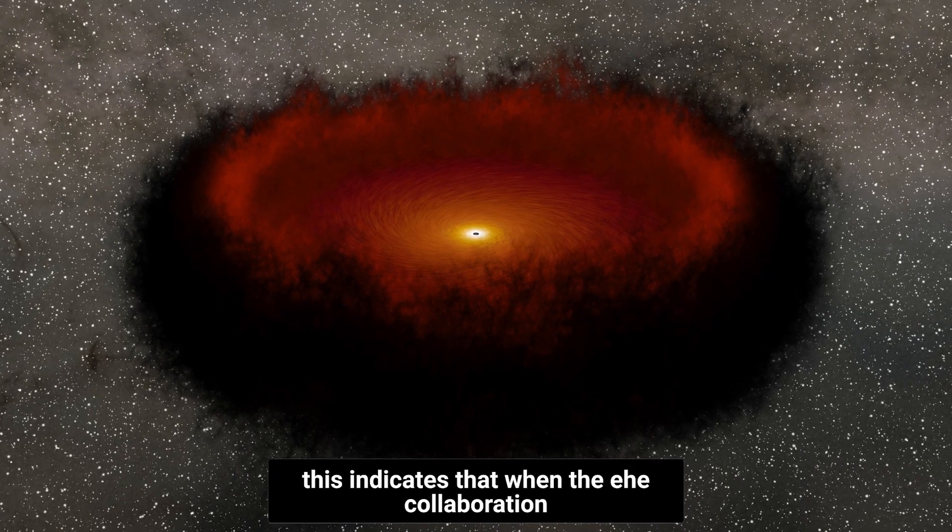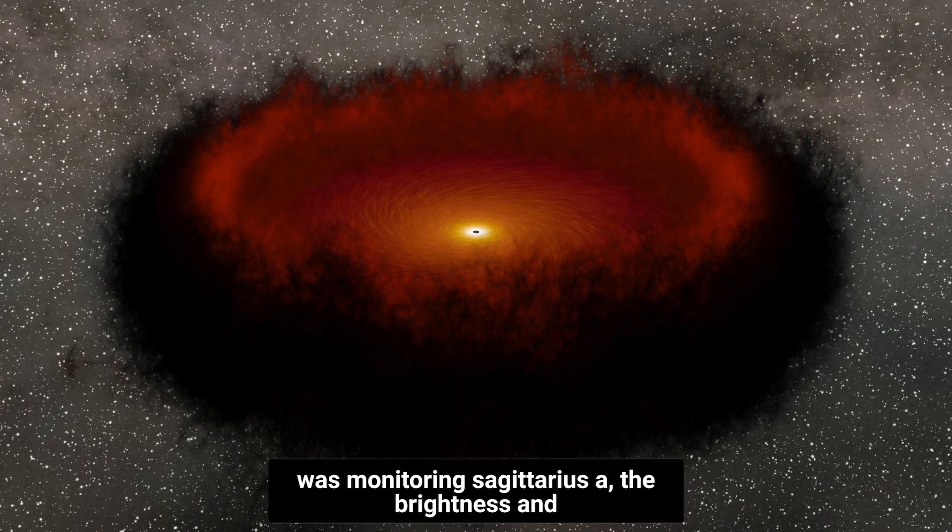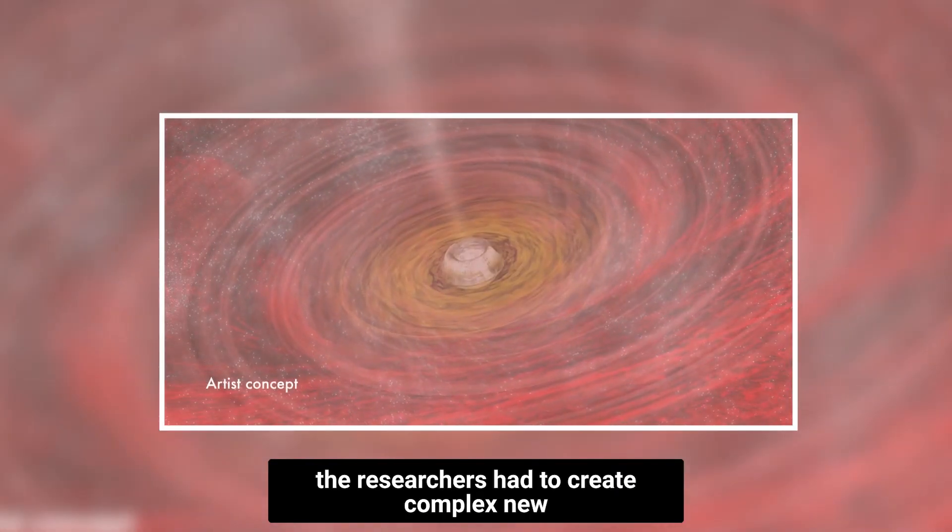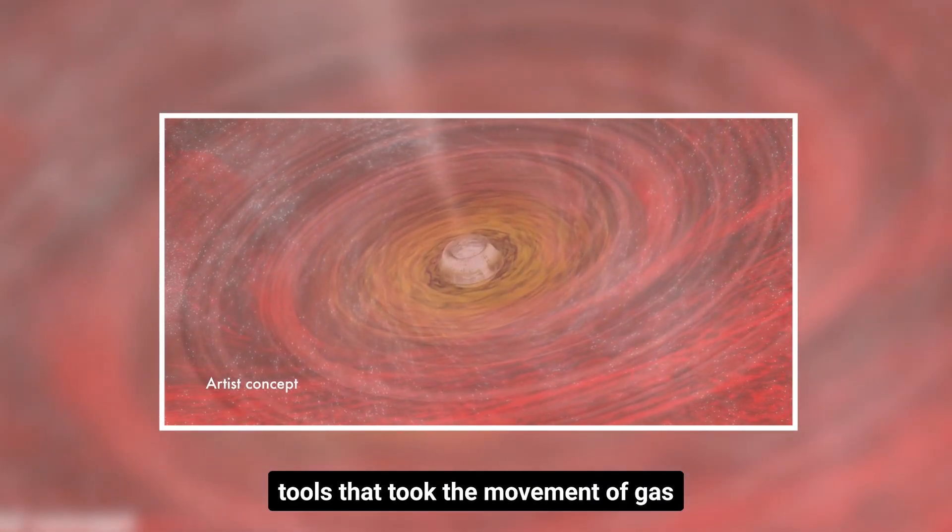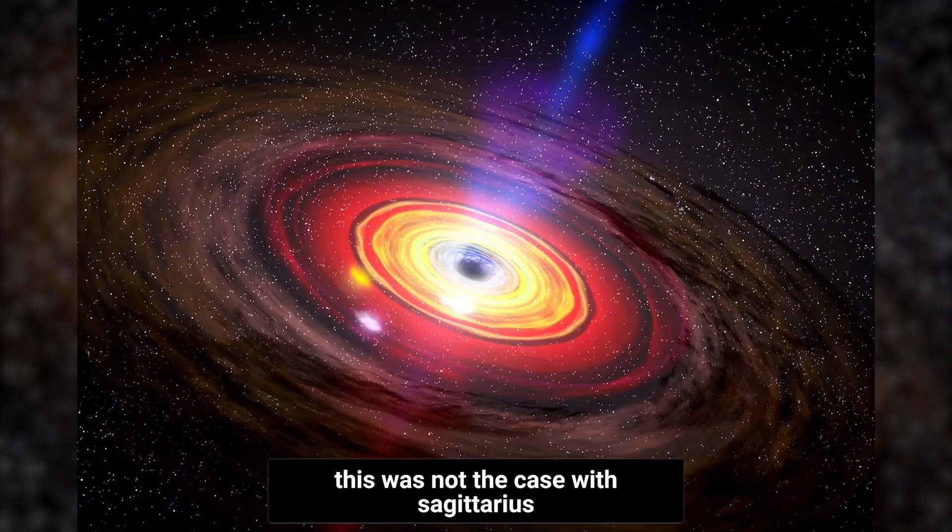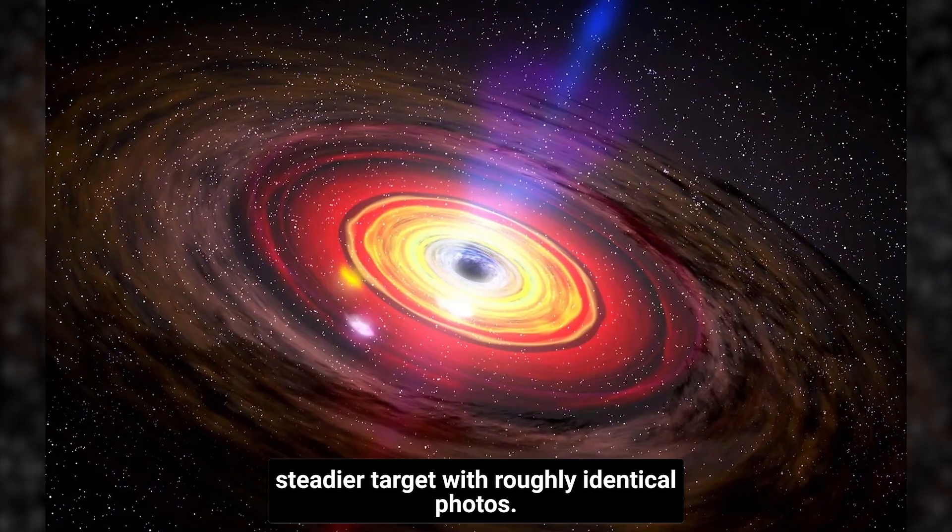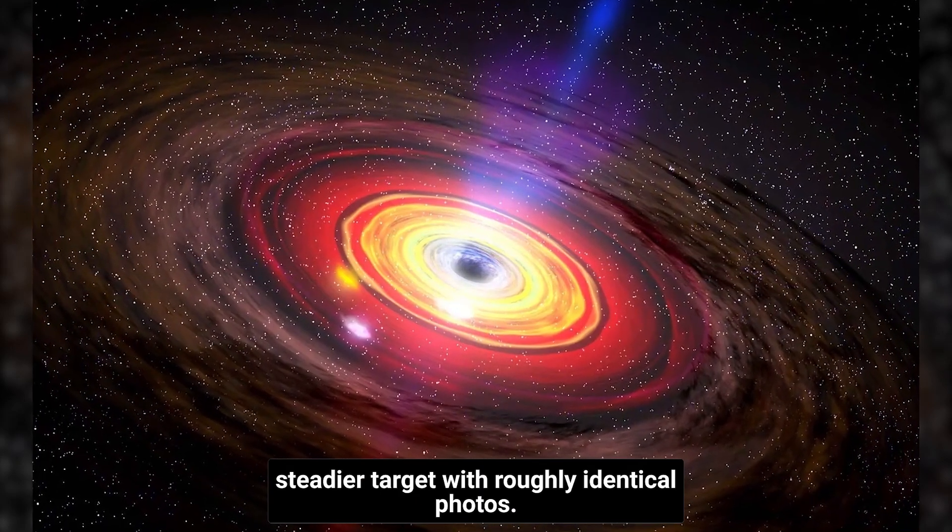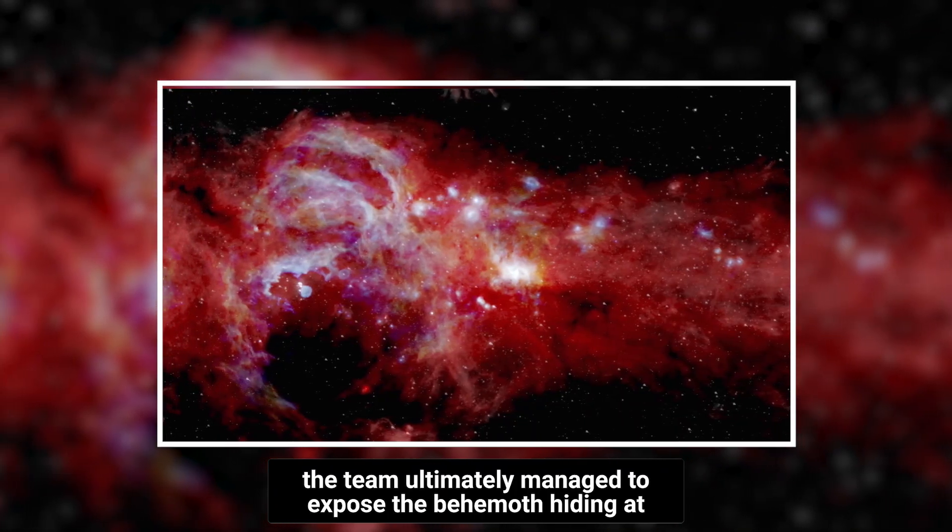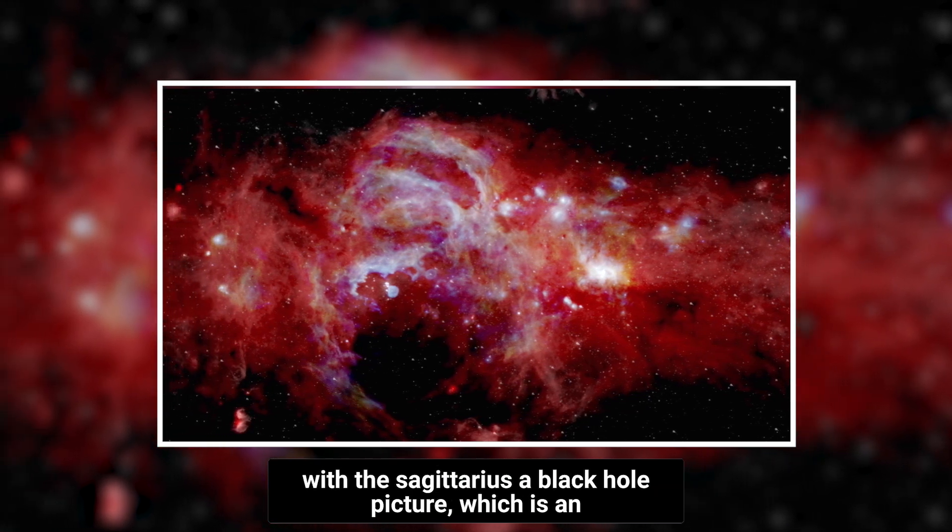This indicates that when the EHT collaboration was monitoring Sagittarius A, the brightness and pattern of the gas were rapidly shifting. The researchers had to create complex new tools that took the movement of gas around Sagittarius A into account. The team ultimately managed to expose the behemoth hiding at the galactic core of our galaxy for the first time with this Sagittarius A black hole picture, which is an average of the several images they recovered.